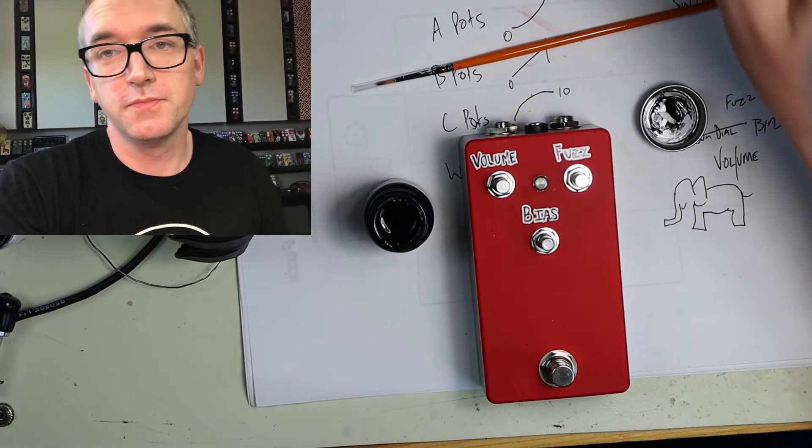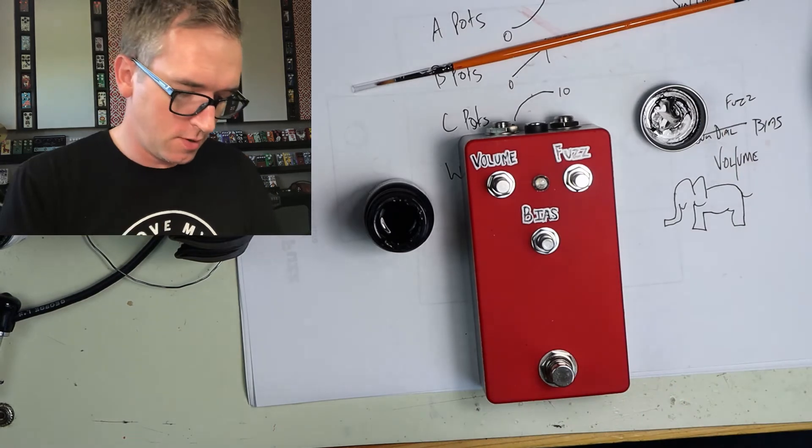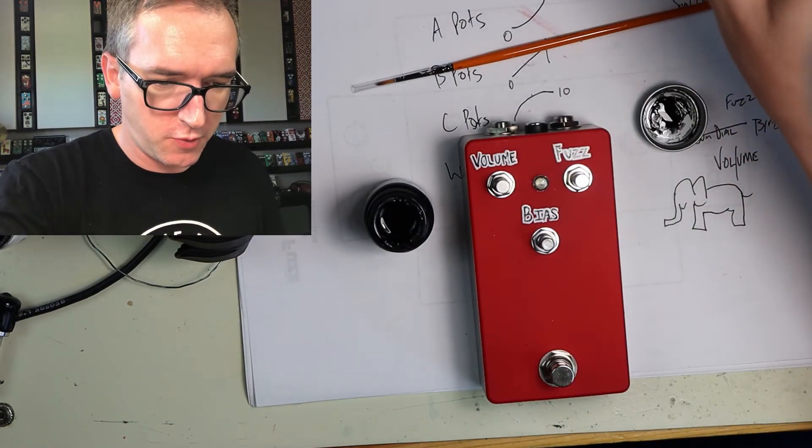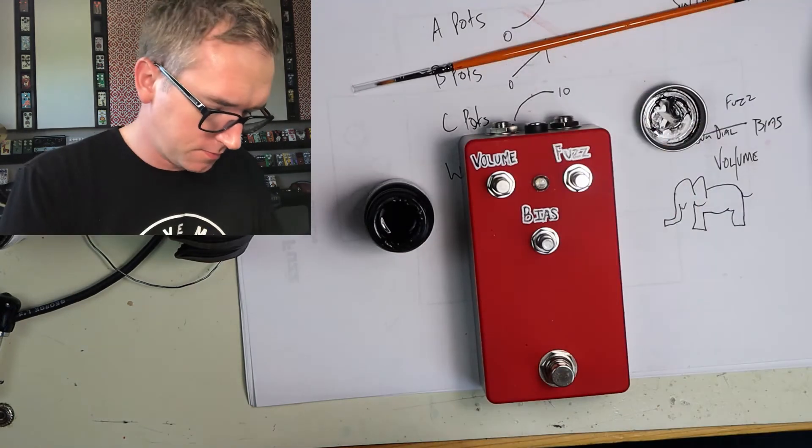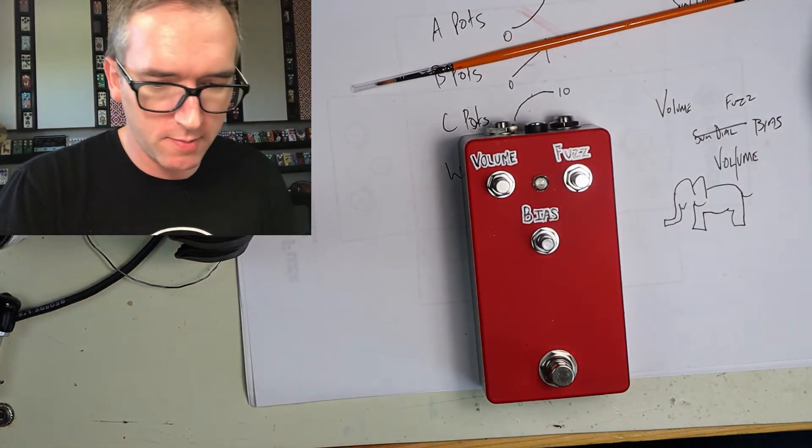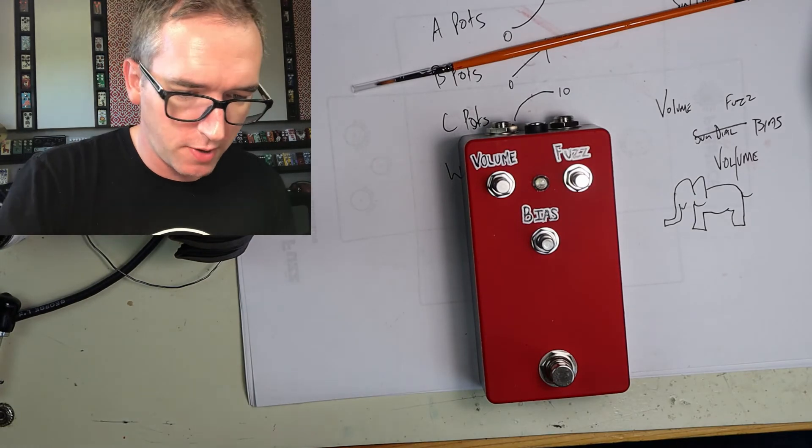There we go. Done. Now what we'll do is put our knobs back on, and we'll bias this. Well, we'll bias it first probably, and then put our knobs back on while that paint dries.